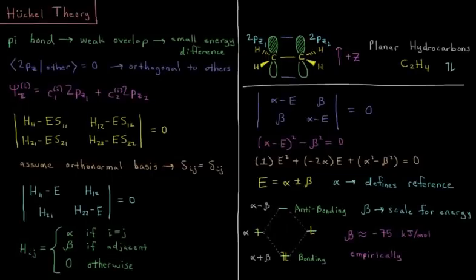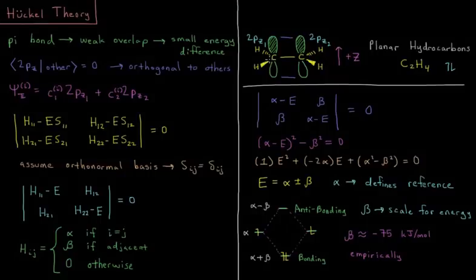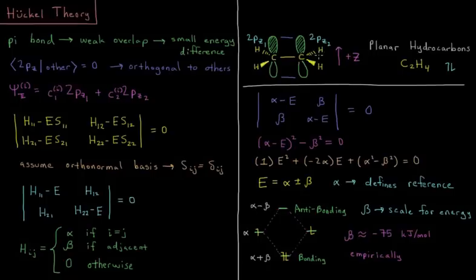This video will discuss Huckel theory for bonding in unsaturated hydrocarbons. For most unsaturated hydrocarbons, like C2H4 ethylene here, we have an sp2 hybridized carbon bonding with another sp2 hybridized carbon, and perhaps a long chain of those.